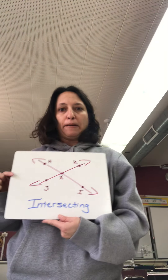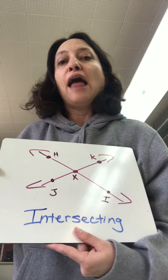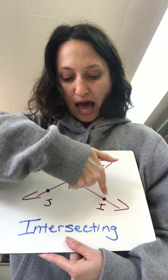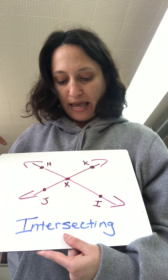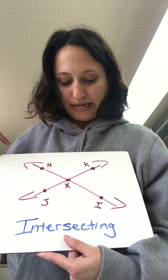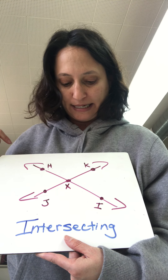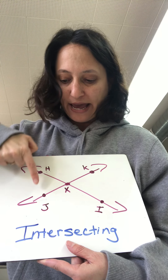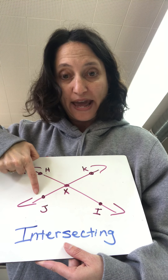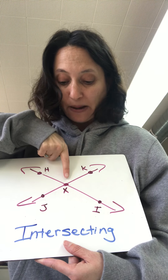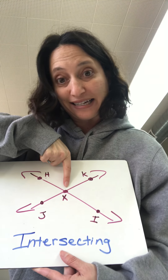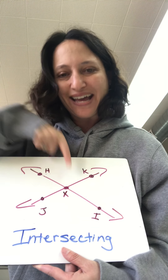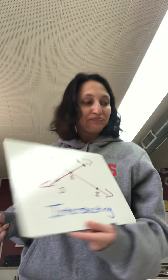So we could say line HI is intersecting line KJ at point X. That's where they meet. So that's intersecting.